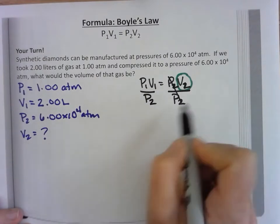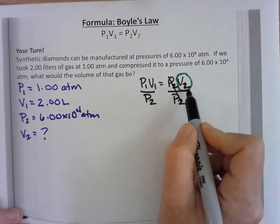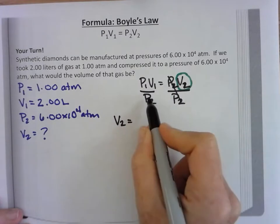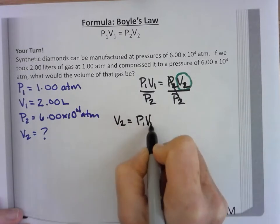I would rewrite this, starting with the variable I'm looking for, V2. V2 equals P1 V1 over P2.